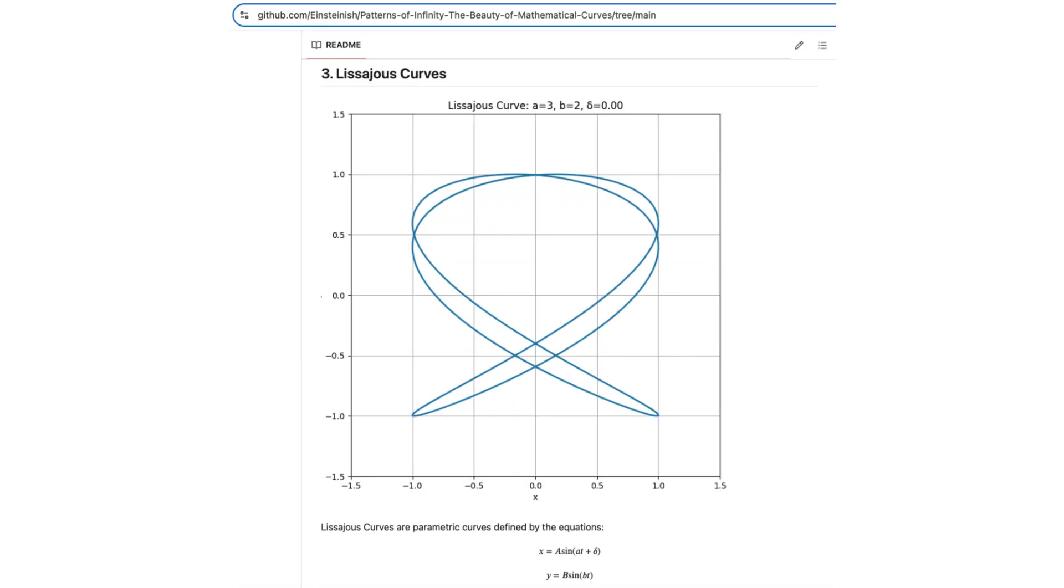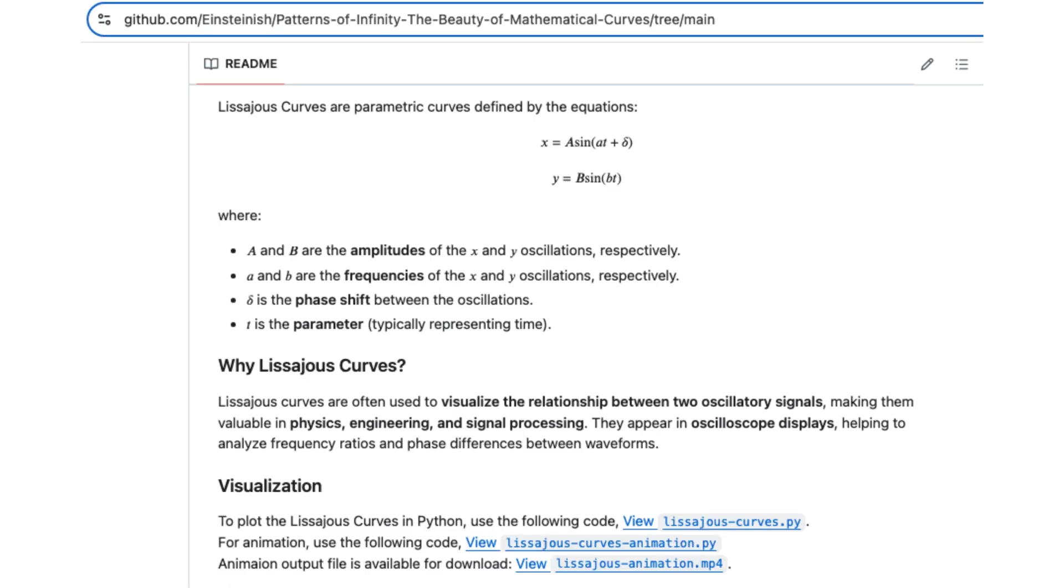Lissajous curves capture the elegance of periodic motion, the intricate loops formed when two perpendicular oscillations interact. These mesmerizing curves emerge naturally in vibrating systems, musical instruments, and electronic signals.